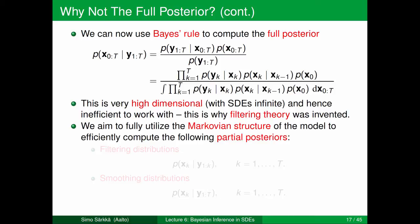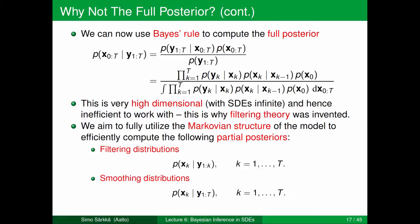Filtering theory utilizes the Markovian structure of the model to efficiently compute partial posteriors. We have the filtering distributions p(xk | y1:k), conditioned on measurements up to the same kth moment we are inferring. The smoothing distributions are p(xk | y1:T) where T can be greater than k, so we are inferring the state at some k which is in the middle of the measurement sequence.